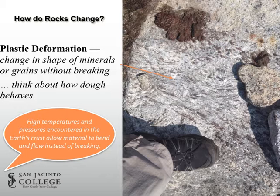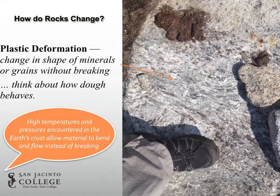Finally, we can also talk about plastic deformation. Plastic deformation occurs, for example, when you melt cheese, or if you have dough that you form into a ball and leave it on the counter and it slowly spreads out into something that doesn't look like the original ball. In plastic deformation, we see a change in the shape of minerals without breaking them. At relatively high temperatures and high pressures, materials behave plastically — instead of breaking, they flow. But if we melt the material, then we're talking about igneous rocks.